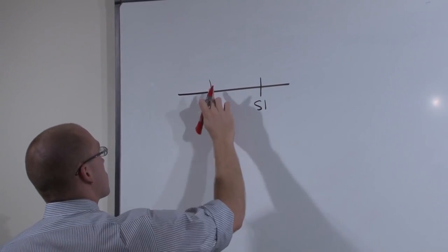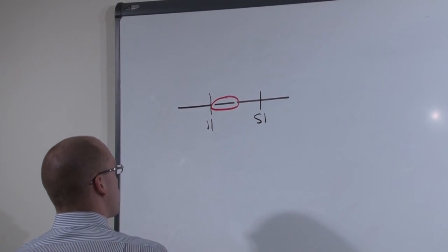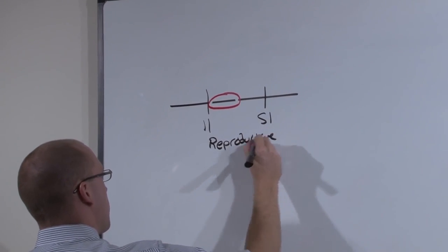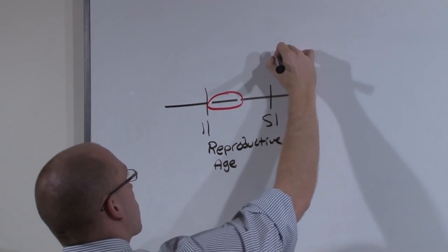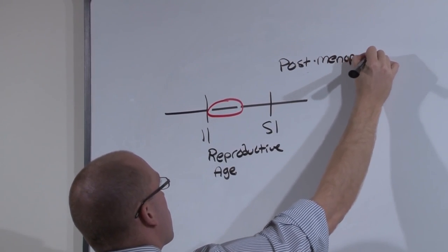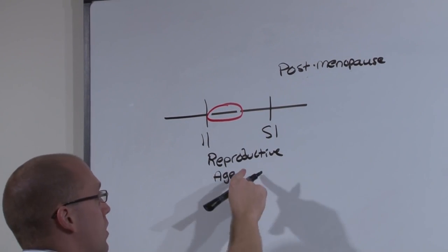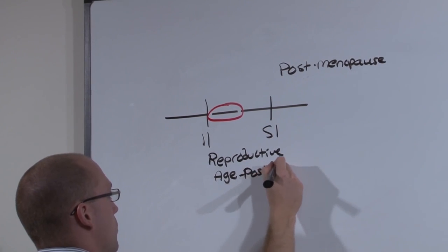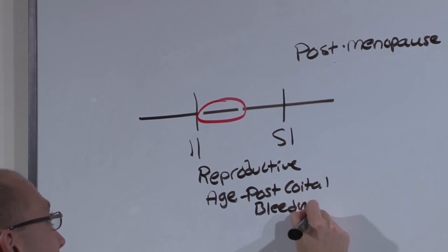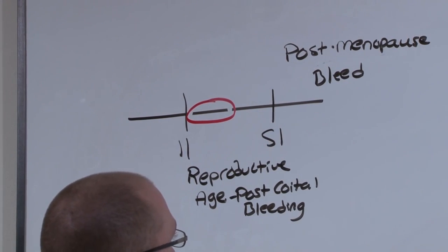Most cervical cancers occur in the reproductive age female, but some can occur post-menopause. Cancer in the reproductive age female presents with post-coital bleeding, and any post-menopausal bleed is suspicious for GYN cancer.